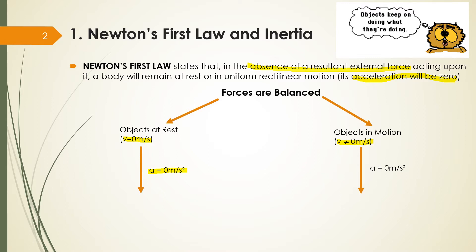When is acceleration zero in motion? When my velocity is constant. So if I'm driving a car at 100 kilometers per hour and I put it in cruise control on a straight road, it's going to keep 100 kilometers per hour. It means I'm not accelerating at all — I'm keeping my motion. So my acceleration will also be zero. I can have acceleration equal to zero both at rest and also in motion.